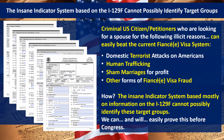Criminal US citizen petitioners seeking a spouse for illicit reasons include those planning domestic terrorist attacks, human trafficking, sham marriages, and other forms of fiancée visa fraud. The insane indicator system based mostly on the I-129F cannot possibly identify these target groups, because the target groups are over 12 years old and can easily beat the system — it's that easy.